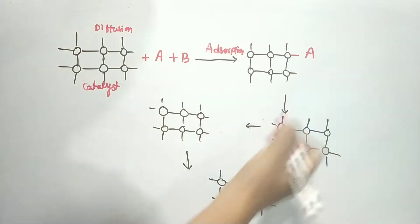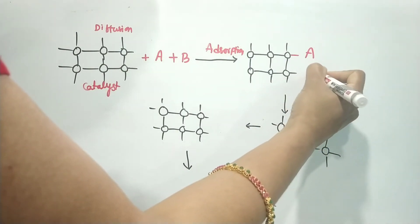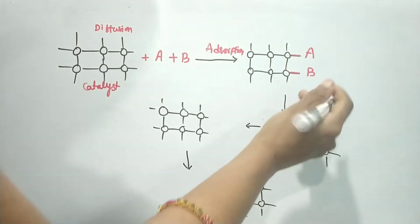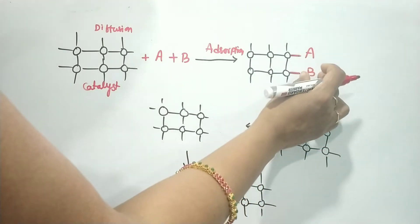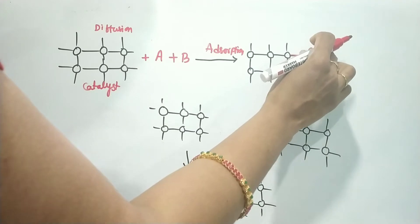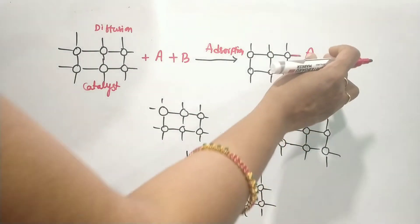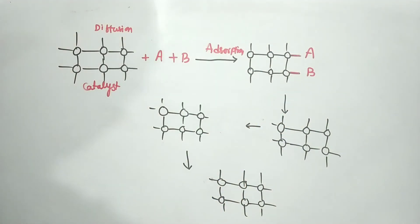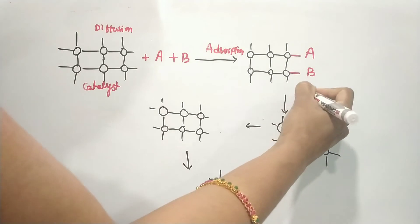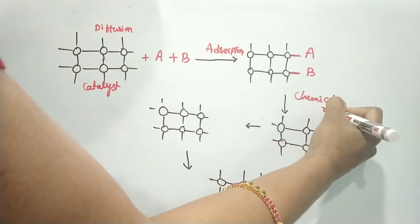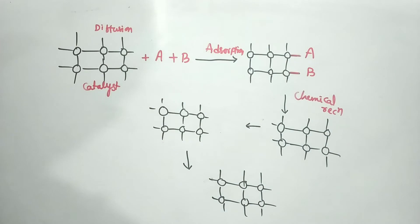In the adsorption step, one molecule is adsorbed and placed on the surface of the catalyst. Reactant A is adsorbed at one site, and reactant B is adsorbed at another site on the catalyst surface. After both A and B are adsorbed, a chemical reaction occurs between them.